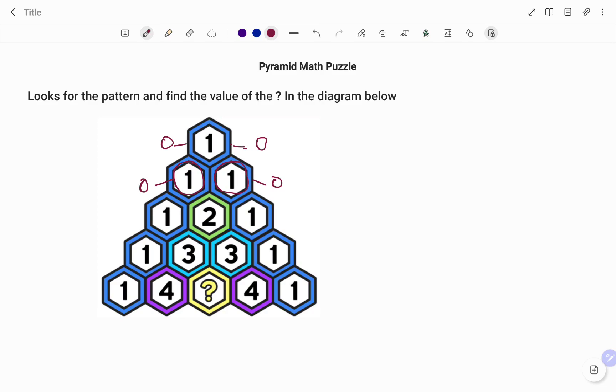But when you add the two boxes at the top, it will give you the value of the box directly underneath, which is 2. So to get 3, we're going to add the two boxes 1 and 2 as shown. 1 and 2 to give you 3.